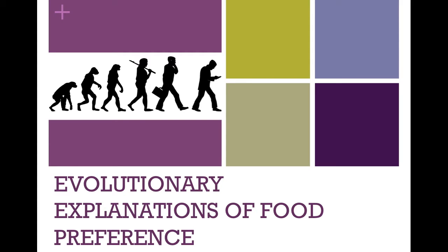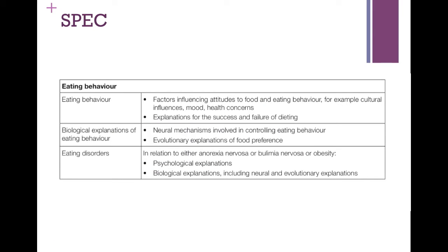Hello and welcome to my video on the evolutionary explanations of food preference. This is applicable to the PSYA3 paper as well as the new specification, which is going to be on Paper 3, the eating behaviours topic. They're covered by both papers. We're down to the fourth bullet point here: evolutionary explanations of food preference. So let's dive straight in.